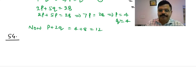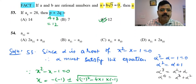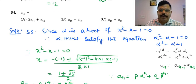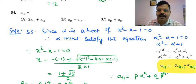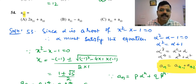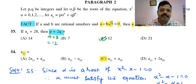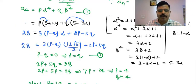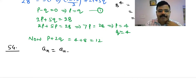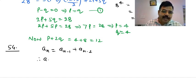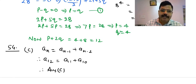For Question 54, they ask for a_12. We have already derived that a_n = a_(n-1) + a_(n-2). Putting n = 12, we get a_12 = a_11 + a_10. Therefore, the answer is option C, since a_12 must equal a_11 plus a_10.